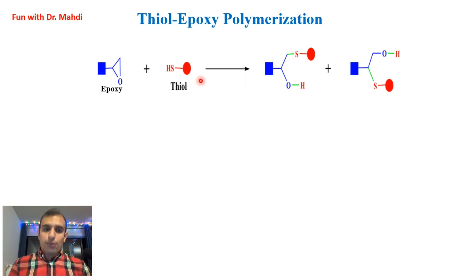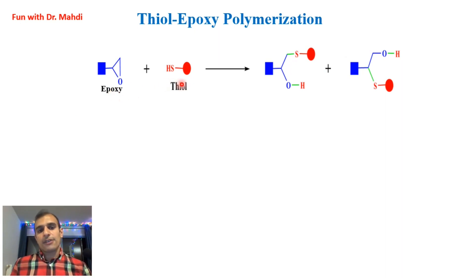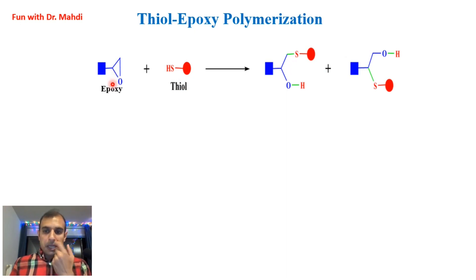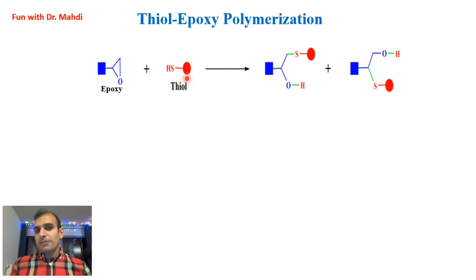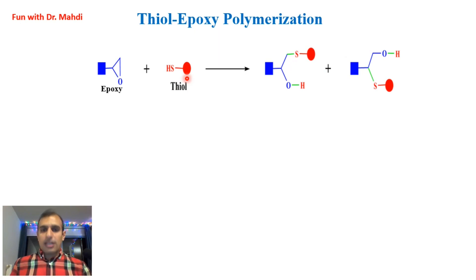It's very important: if you have only one type of monomer, you cannot use click chemistry for polymerization. For example, you have two monomers. On the surface of one monomer you have epoxy, and on the surface of the other monomer you have thiol. You need to have at least two epoxy groups on every monomer, and at least two thiol groups on the other monomer. If you have only one epoxy or one thiol group, you cannot use click chemistry for polymerization.